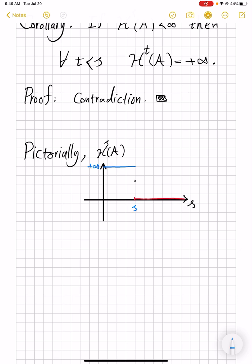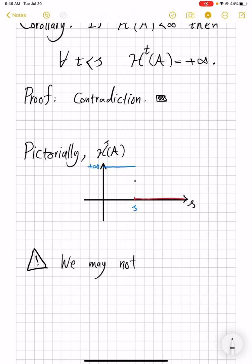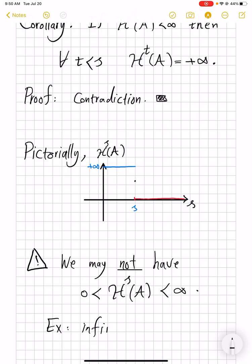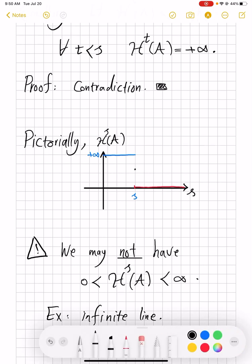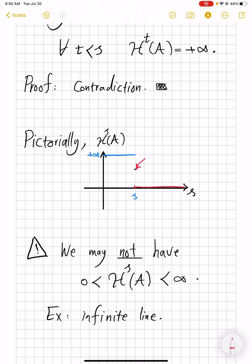This is misleading in some sense because this theorem and corollary were predicated on the assumption that H^s(A) is finite at some point. My picture suggests that at some value you will have a positive but non-finite value — that doesn't have to be the case. An example would be an infinite line and the one-dimensional Hausdorff measure: its H^1 measure is infinite simply because it's a long line, so its length is infinite. To emphasize again, this critical point could be either with the zero part or with the infinite part.